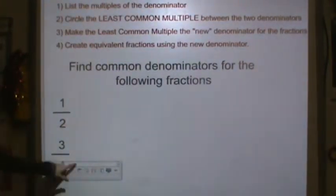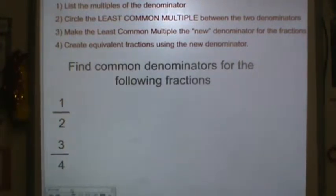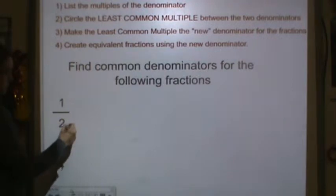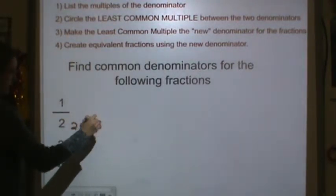So let's try it. We have one half and three-fourths. So the first step is to list the multiples of the denominator. So multiples of 2: 2, 4, 6, 8.